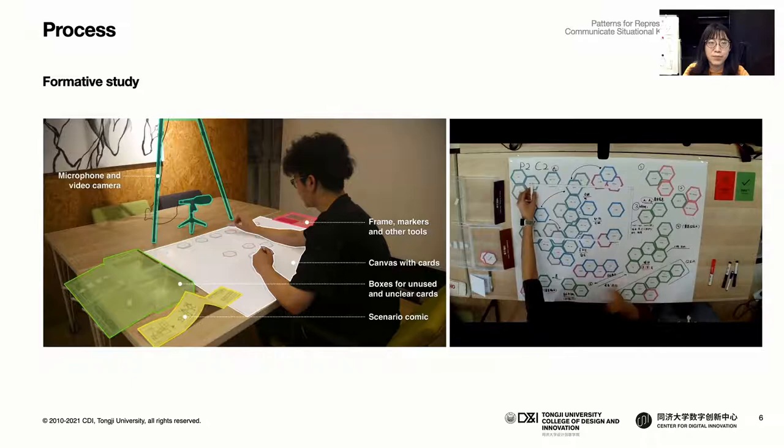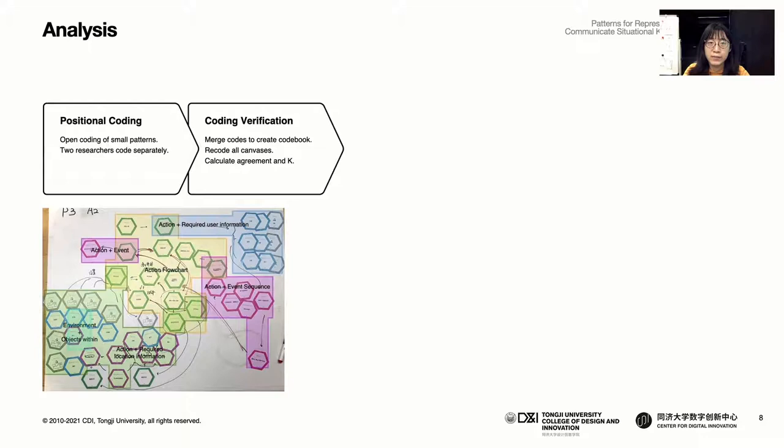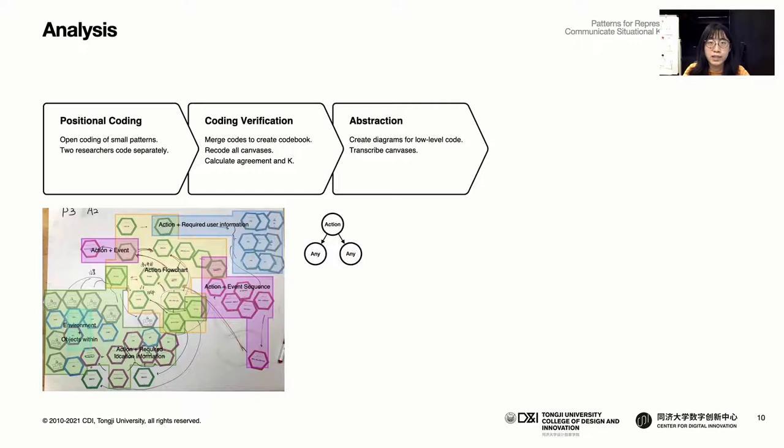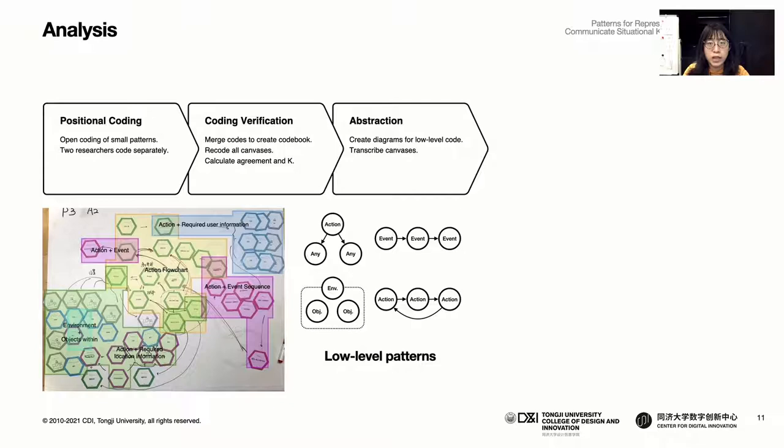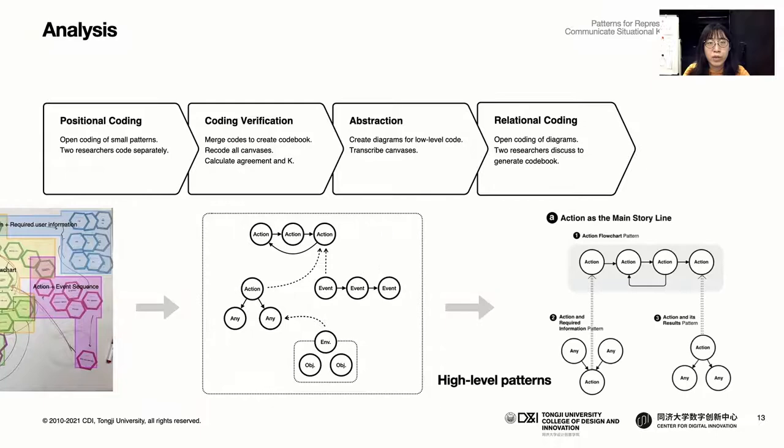To extract common patterns from the final canvases, we developed a five-step process that consists of iterative coding and verification. The coding is done in two levels: one for local, smaller patterns or low-level patterns, and one for the overall structure of the canvas or high-level patterns. We use diagrams to formalize them to arrive at the final pattern library.